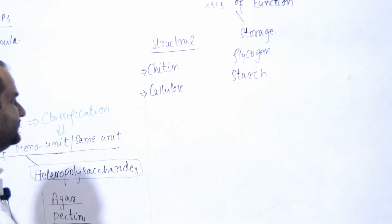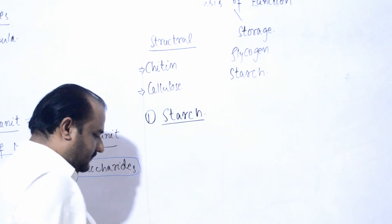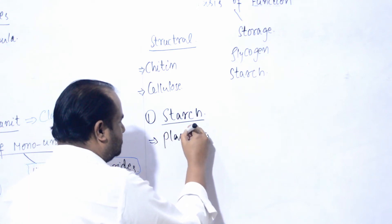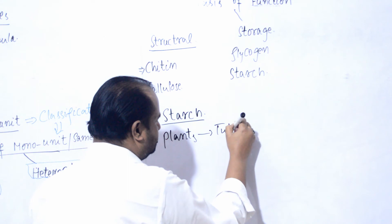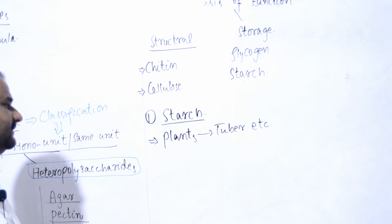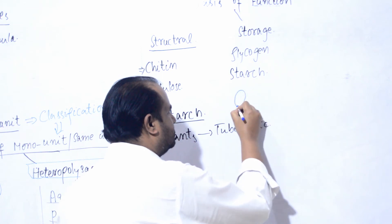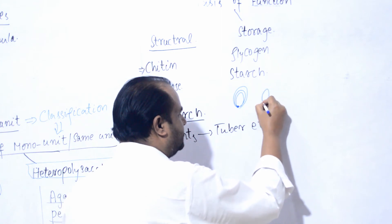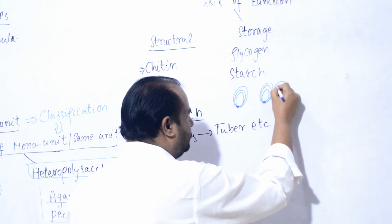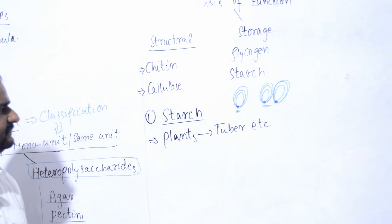In case of the starch, these are present in plants - plants ke tubers etc. mein starch maujood hote hain. Agar main structure ki baat karun, on the basis of hilum: yahan par yeh saara ka saara starch hai. Sometime in case of potato, ek se zyada hilum maujood hote hain aur woh ek doosre ke saath jude hue hote hain. Yeh simple starch hai, yeh complex starch hai - on the basis of hilum.